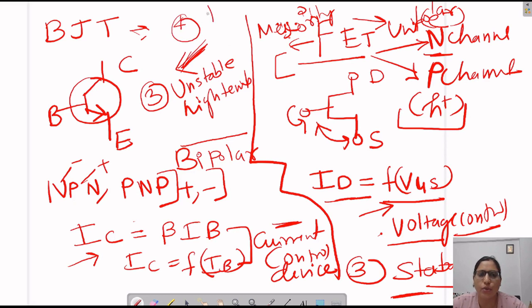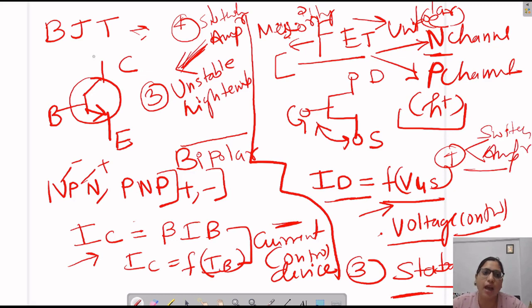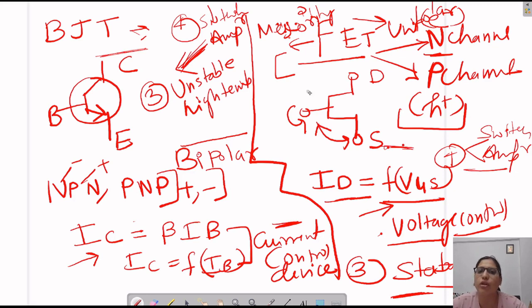Regarding applications, BJT works as a switch or as an amplifier. Similarly, FET also works as a switch and an amplifier. So FET is a higher version of transistor — where BJT is unstable at higher temperature, FET is stable. If BJT has a few shortcomings, FET overcomes those shortcomings. That is why FET is called a field effect transistor.